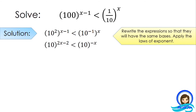Applying the power rule: 2 times x is 2x, 2 times negative 1 is negative 2, and negative 1 times x is negative x. Now they already have the same base, so we can equate the exponents. There is no need to reverse the inequality symbol because the base is greater than 1, so it will still be less than.